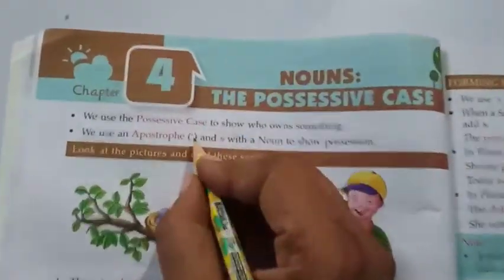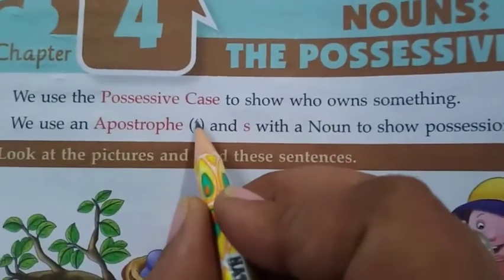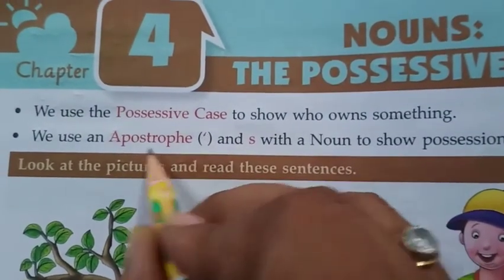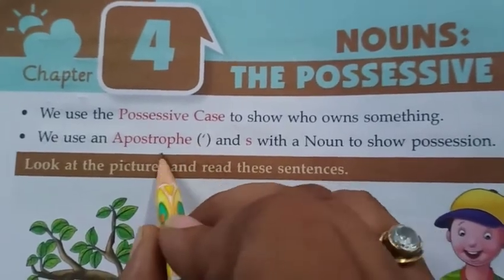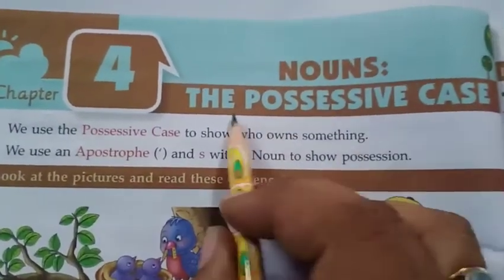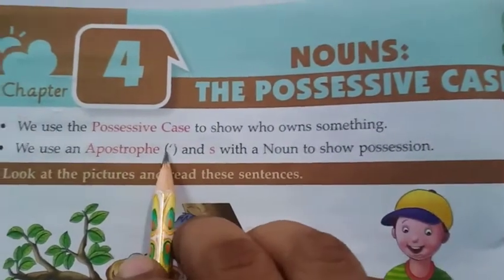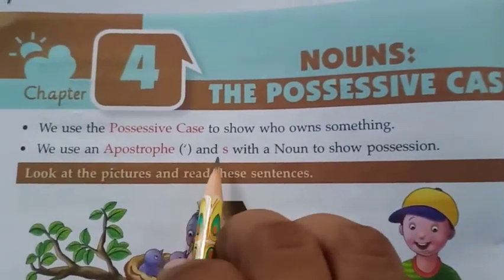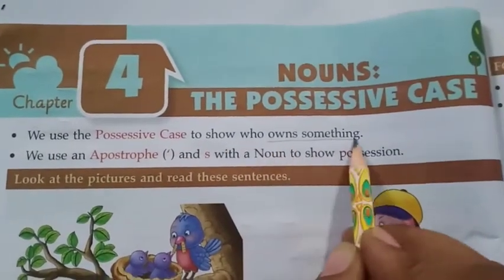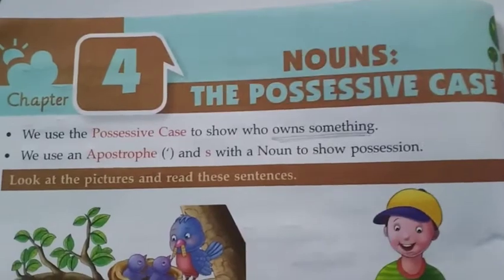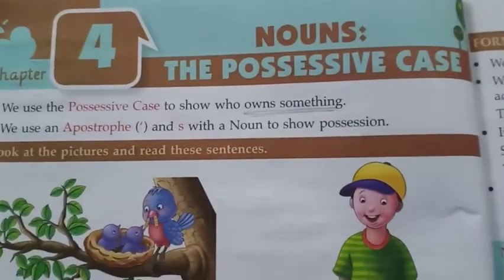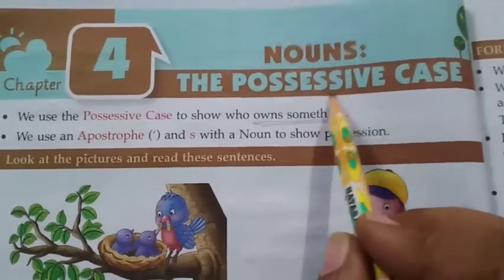You must have seen this sign everywhere, many times in your books. What does this mean? Apostrophe. So in possessive case — possessive nouns mein — apostrophe and S is used. We use the possessive case to show who owns something. Jab humme batana hota hai ki woh chiz uski hai specially, toh hum possessive case use karte hai.